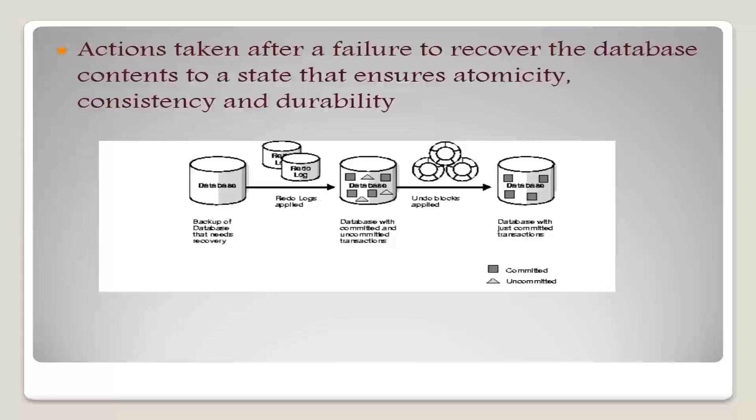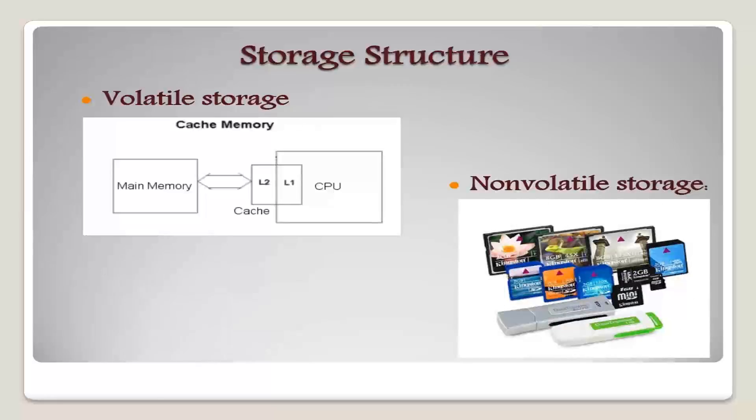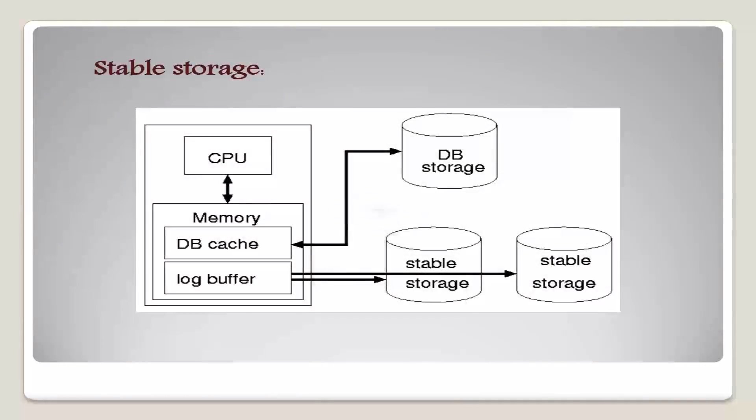Moving to the storage structures, there are various types. First is volatile, second is non-volatile, and third is stable storage. Volatile storage does not survive system crashes, examples are main memory and cache memory. Non-volatile storage survives system crashes, examples are disk, tape, flash memory, and RAM. Stable storage is a mythical form of storage that survives all failures, approximated by maintaining multiple copies on distinct non-volatile media.